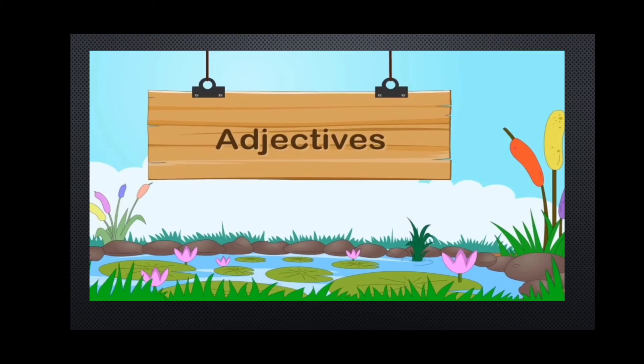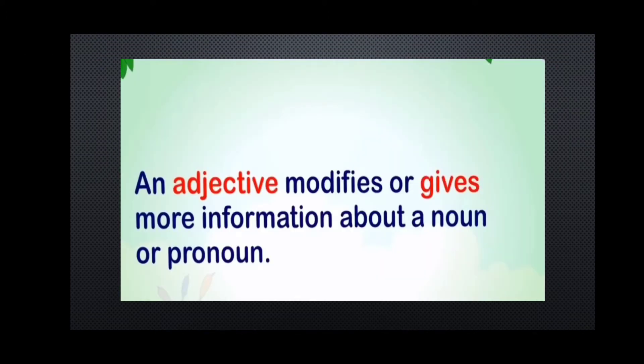So, what are adjectives? An adjective modifies or gives more information about a noun or pronoun. Adjectives are the describing words that tell more about a noun and pronoun. A noun is the naming word of any person, place, animal or a thing. And a pronoun is a word used in place of a noun. So, to describe a noun and pronoun, we use an adjective, which tells us about the noun and pronoun.